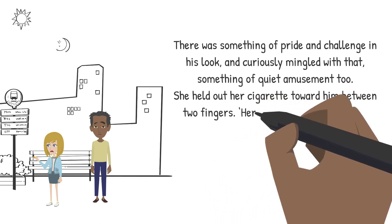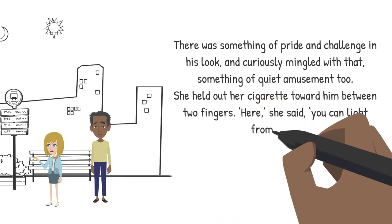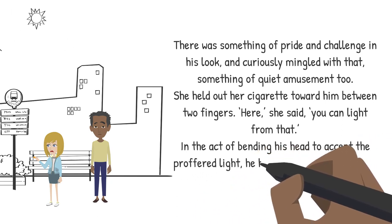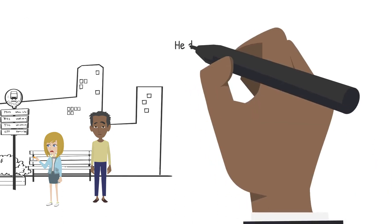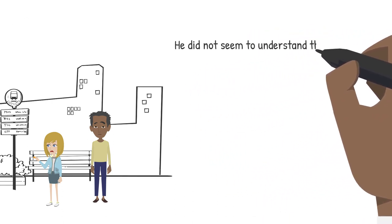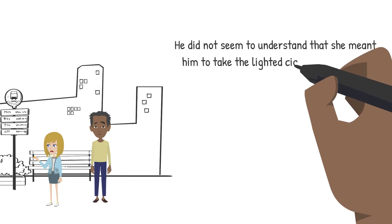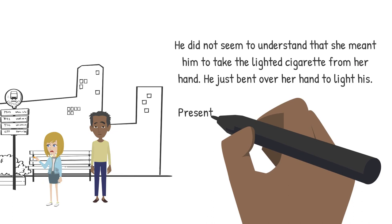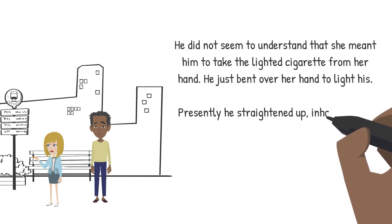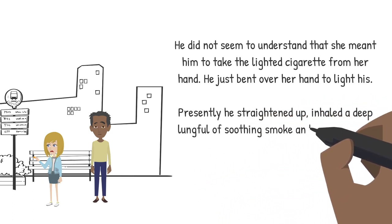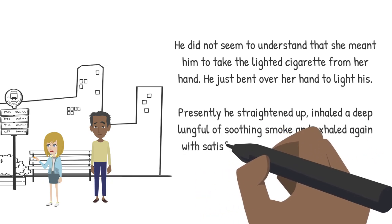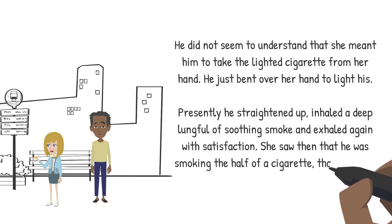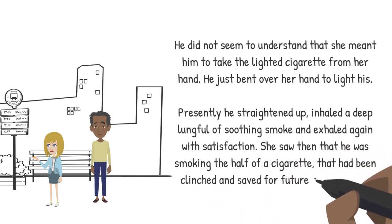She held out her cigarette toward him between two fingers. 'Here,' she said, 'you can light from that.' In the act of bending his head to accept the proffered light, he had perforce to come quite close to her. He did not seem to understand that she meant him to take the lighted cigarette from her hand. He just bent over her hand to light his. Presently he straightened up, inhaled a deep lung full of soothing smoke, and exhaled again in satisfaction. She saw then that he was smoking the half of a cigarette that had been clinched and saved for future consumption.